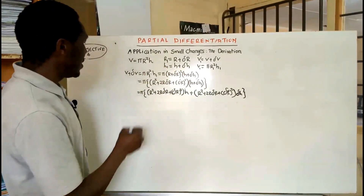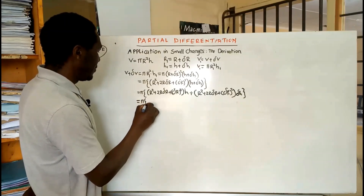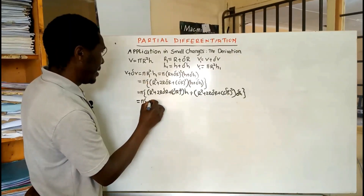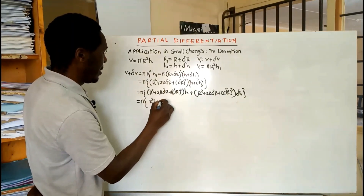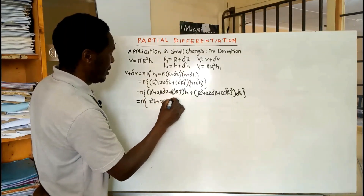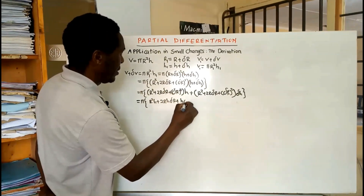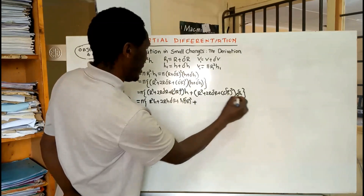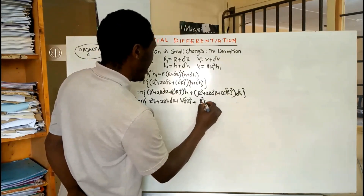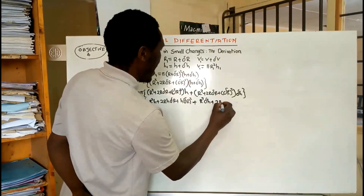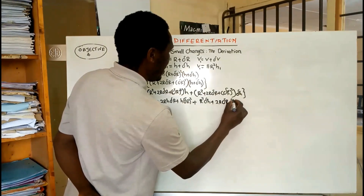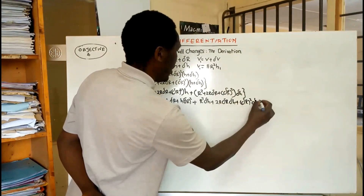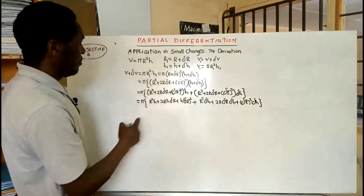We then multiply each term by delta h to get r squared delta h plus 2r delta r delta h plus delta r squared delta h. So distributing pi into all terms, our full expansion contains pi times all of these expressions.